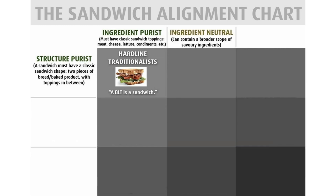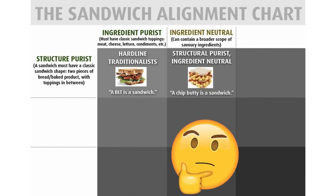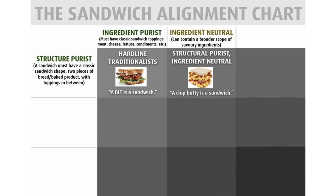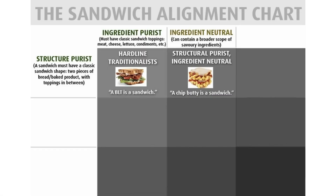Ingredient neutral can contain a broader scope of savory ingredients. So you're structurally pure and the ingredients are neutral. A chip butty is a sandwich. Is that chip butty or chip buddy? I've never heard of this kind of sandwich — it looks like it's got cheese or chips in it.